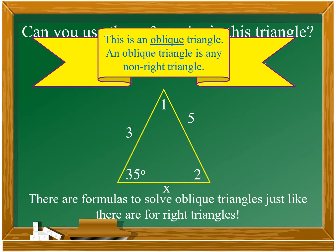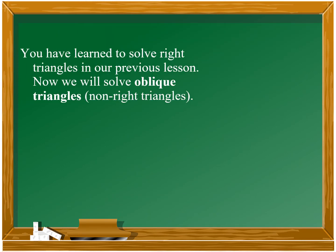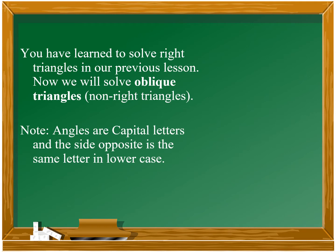There are formulas to solve oblique triangles, just as there are for right triangles. You have learned to solve right triangles in our previous lesson. Now we will solve oblique triangles, or what we call non-right triangles. But take note: angles are written as capital letters and the side opposite is the same letter in lowercase. So in this oblique triangle, angle A and its opposite side is side a, written in lowercase.